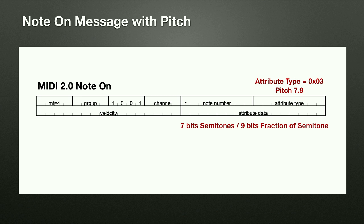Pitch 7.9 uses a 16-bit attribute field: 7 bits of semitone tuning referenced exactly as in MIDI 1.0 note on, plus 9 bits of fractional semitone for very fine tuning. This allows much better pitch control than MIDI 1.0. For example, in a C major to F chord with an augmented chord in between, making that G# slightly sharper using this pitch attribute causes the augmented chord to pull harder toward the F — composers will love this kind of pitch control.